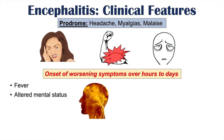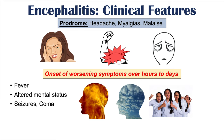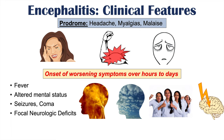Patients can progress into more severe stages such as seizures and coma, and they can also have focal neurologic deficits. With focal neurologic deficits, patients may have issues with functioning of a particular limb — a finding also seen in strokes or brain abscesses.